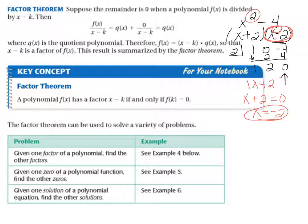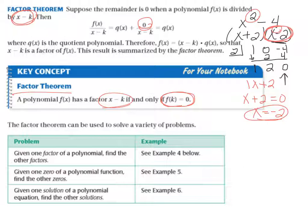When I get a remainder of 0, that means what I divided by is a factor. The Factor Theorem says a polynomial f(x) has a factor x minus k if and only if f(k) equals 0. Here's what we can do with this: the Factor Theorem can be used to solve a variety of problems — given one factor of a polynomial, find the other factors.